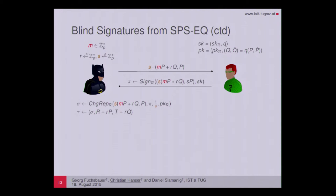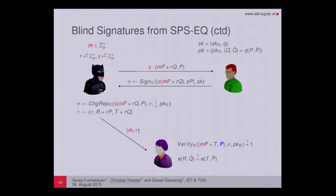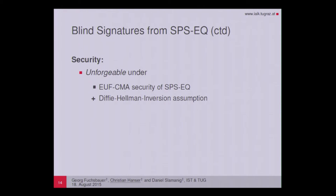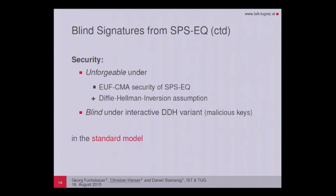When a verifier is given message M and signature tau, the verifier first recomputes the Pedersen commitment using value T, checks whether the corresponding normalized representative verifies under sigma, and additionally checks whether the discrete logs in value T with respect to base P equal R times q — done using two pairings. The scheme is unforgeable under the EUF-CMA security of SPS-EQ and the Diffie-Hellman inversion assumption, and blind under an interactive variant of the DDH assumption in the malicious key model. Throughout this talk, I will focus on the blindness proofs, as the unforgeability proofs are rather straightforward.